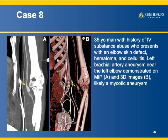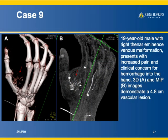Here's a patient with IV drug abuse showing a brachial artery aneurysm — a very nice example with the arm by the side and the patient comfortable. Another case: a 19-year-old with a right thenar eminence venous malformation presenting with increasing pain. A 4.8 cm vascular lesion is classic in appearance for a vascular malformation — you can see the arterial and draining structures very nicely.